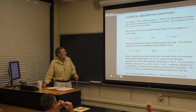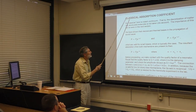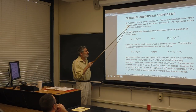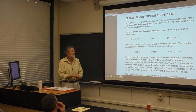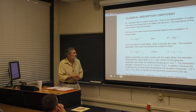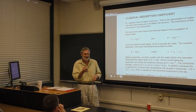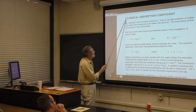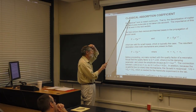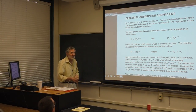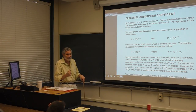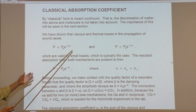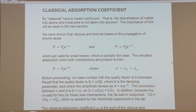What we're headed towards here is what's called the classical absorption coefficient. What we mean by classical here is that we're treating the medium as a continuum — we're neglecting the fact that ultimately, if you zoom way in on a medium, you're going to see molecules or atoms. We're neglecting any kind of microscopic effects due to the discretization of matter.